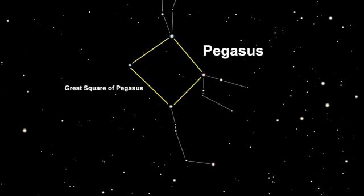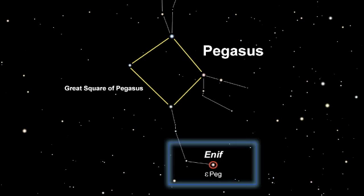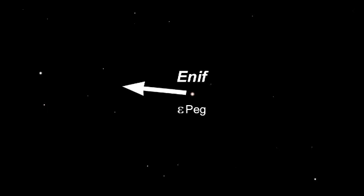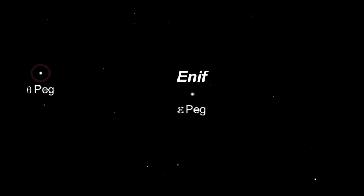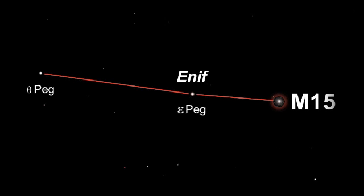Find Pegasus on your star atlas or planisphere, and look for the star Enif, or Epsilon Pegasi, which marks the tip of its nose. Backtrack up its head, and it will bring you to the star Theta Pegasi. You need to construct an imaginary line between these two. Continue this line back down in the direction Pegasus is facing, and past Enif for around half the distance between the two stars you've just found, and you'll come across M15.